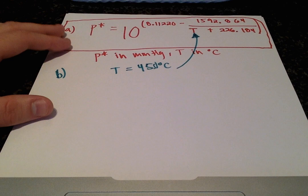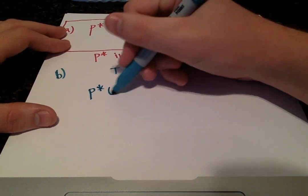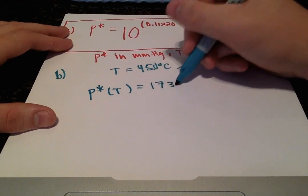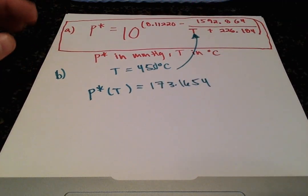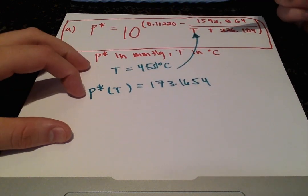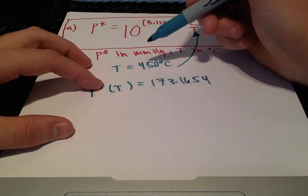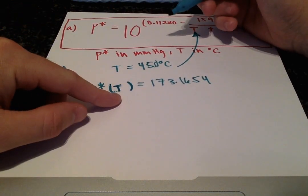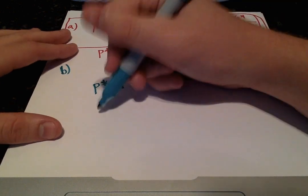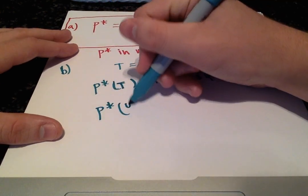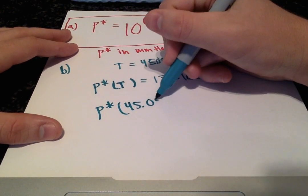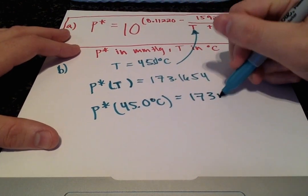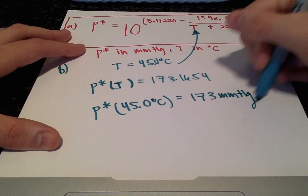And doing that, we get 173.1654, and this is just a notation thing right here. You can write the vapor pressure, and then you put in parentheses T, because that's the temperature we're looking at, and this is the vapor pressure you get. So for our final answer, let's write the temperature we're looking at, 45 degrees Celsius, that's 173 millimeters of mercury.